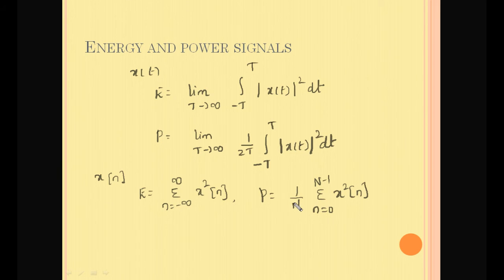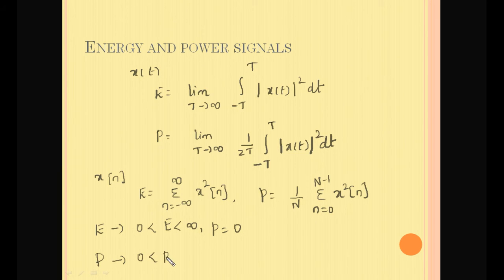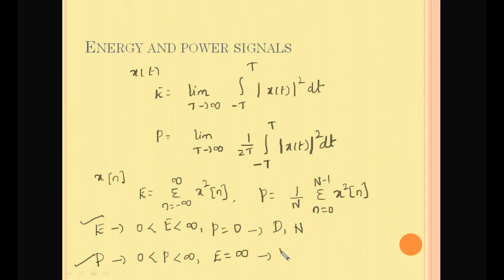The average power of a signal with fundamental period N is given by Σ(n=0 to N−1) |x(n)|². A signal is said to be an energy signal if its energy is finite and power equals zero. Similarly, a signal is a power signal if its power is finite and energy is infinite. Some signals are neither energy nor power signals. Generally, deterministic and non-periodic signals are treated as energy signals, whereas random and periodic signals are treated as power signals.